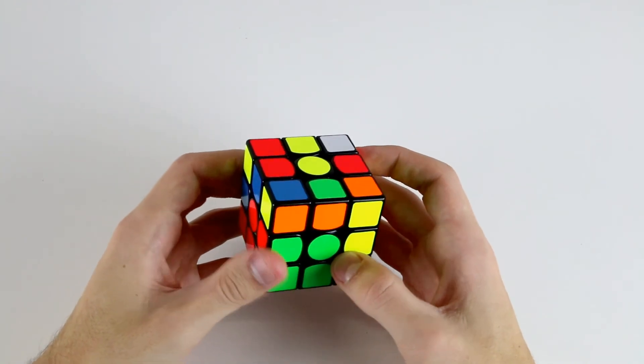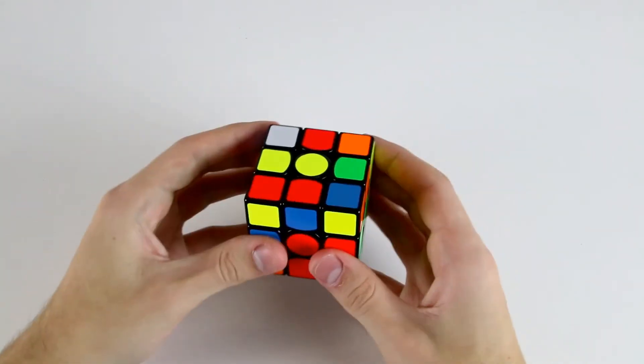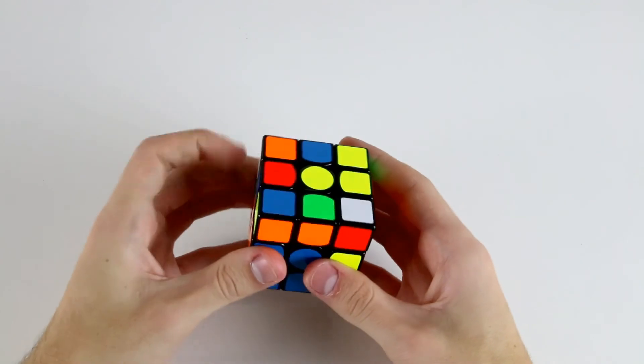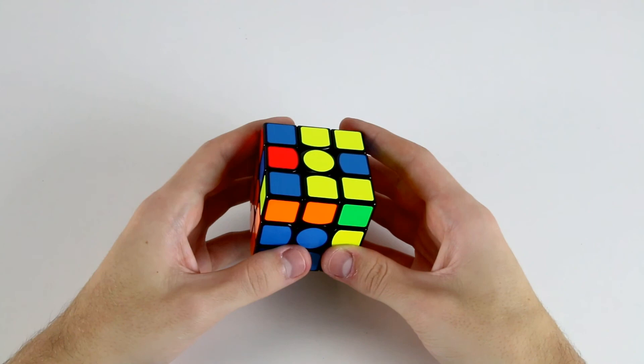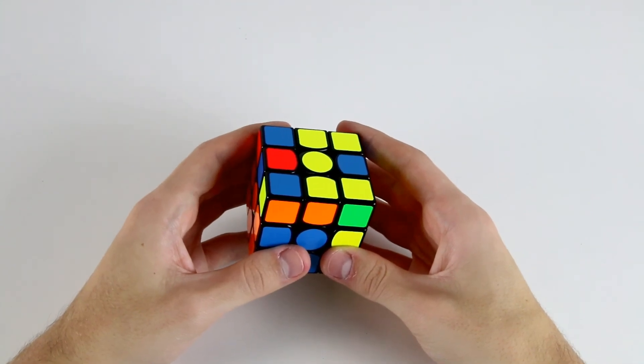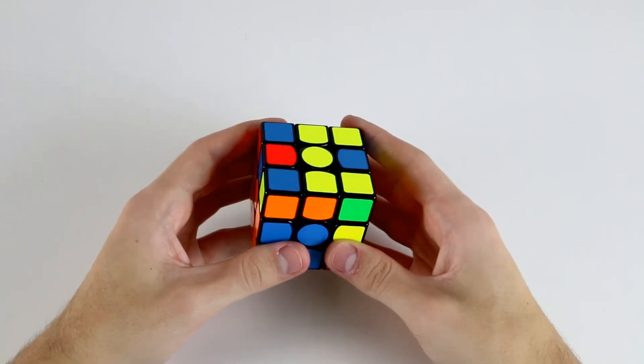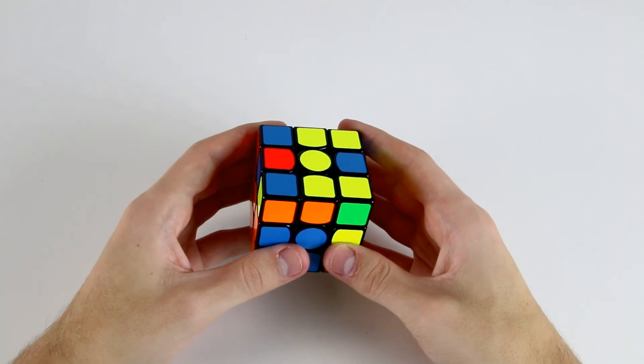However, perhaps an easier thing to do is probably just rotate, take it out and then insert it, something like that. However, for the vast majority of F2L cases, if you have an oriented edge then there shouldn't be any need to rotate the cube to insert your F2L pair.